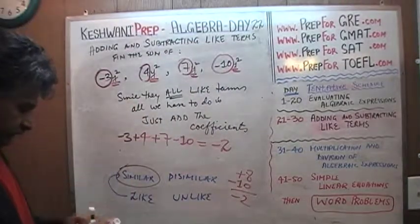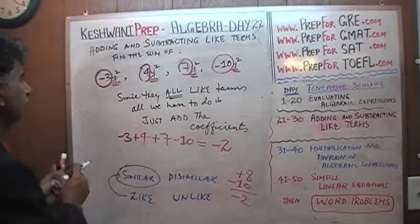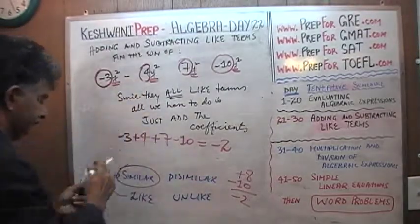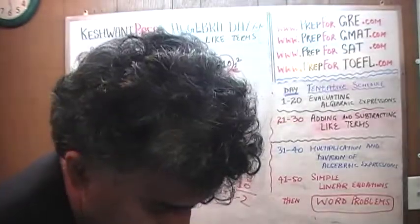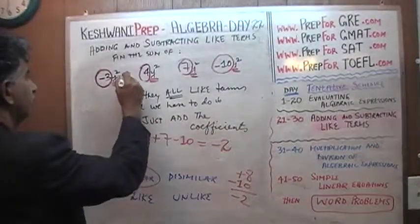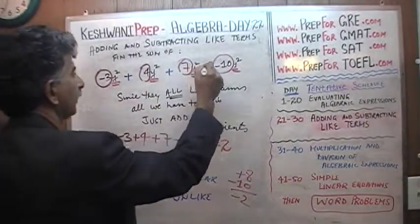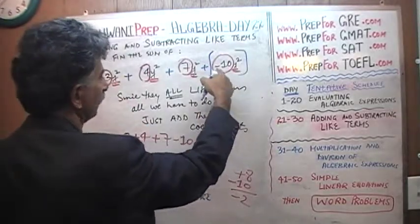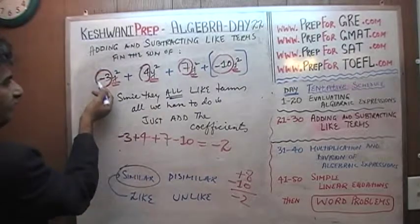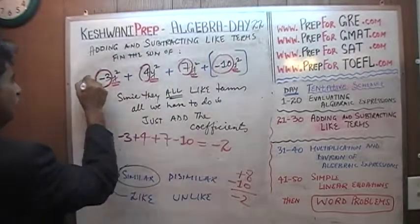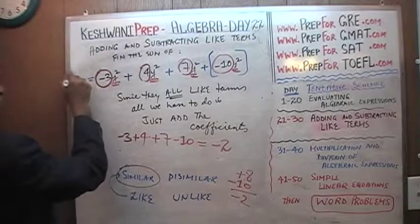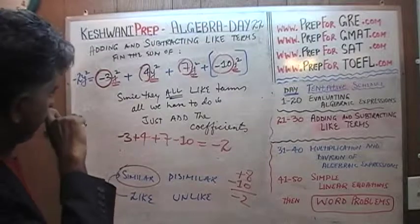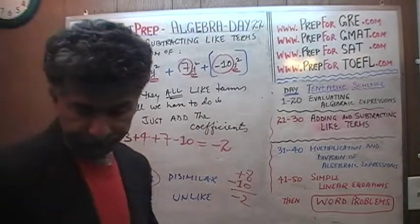So the sum of these four terms is negative 2y squared. That's it — negative 2y squared, that's the answer.